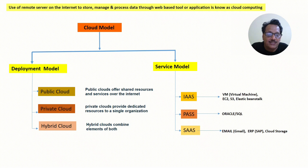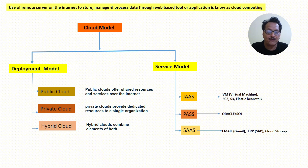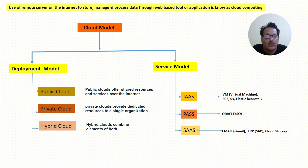Platform as a Service: suppose you have an Oracle instance that you want to run, but you do not have a server available right now. Platform as a Service is available with the cloud service provider — you can run your Oracle instance directly on their Oracle platform. The hardware, OS, and Oracle platform will be taken care of by them. Availability management and redundancy will be handled by them — these are all part of Platform as a Service.